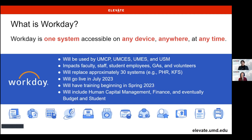Workday is going to be replacing approximately 30 systems. Some of the big ones include PHR — where your HR and appointments sit today — as well as KFS, where we do all of our financial statements. This will consolidate everything into one system. We go live in 2023 for HCM — human capital management, or HR — and Finance. The formal training for end users on these two functions will begin in spring of 2023. Budgeting will go live in January of 2024, and the student systems will be fully implemented by fall of 2026.